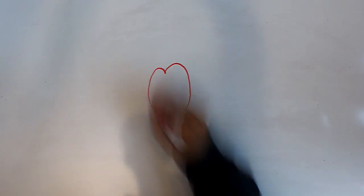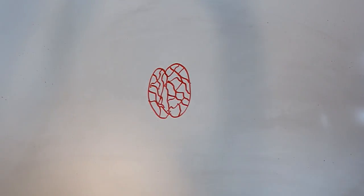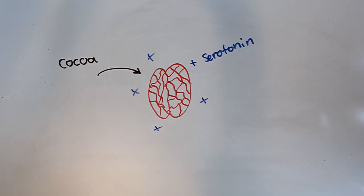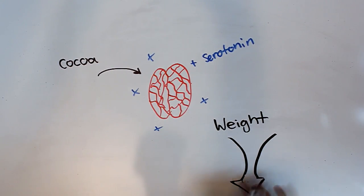Cocoa also helps people lose weight by stimulating serotonin production in the brain. Serotonin helps suppress your appetite, therefore meaning you'll consume less calories in the long term.